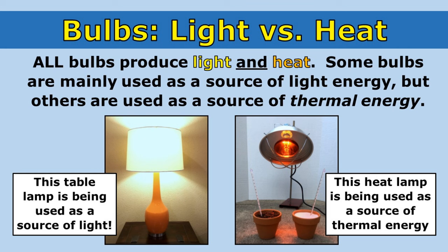I want to spend a minute talking about something that can be pretty tricky. All bulbs produce both light and heat. Some bulbs are mainly used as a source of light energy, but others are used as a source of thermal energy — the bulb is used to produce heat. For example, if you grabbed the bulb from a table lamp, it would hurt because the bulb would be very hot.